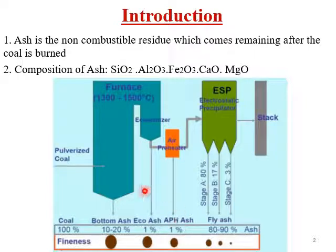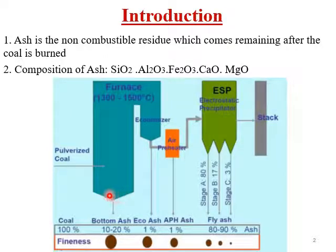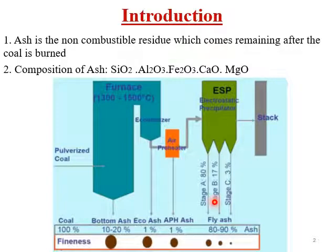There is also bottom ash, which consists of heavier or denser particles that settle at the bottom layer, making up about 20% of the total ash. In a power plant, there is 20% bottom ash and 80% fly ash. I will now explain how to handle both bottom ash and fly ash.